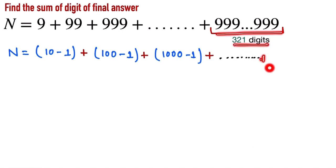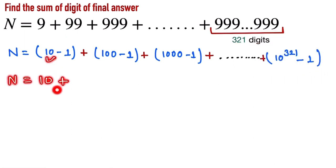10. 10 to the power 321 minus 1. This one. So now we take the common 10. So here 10 and 100...